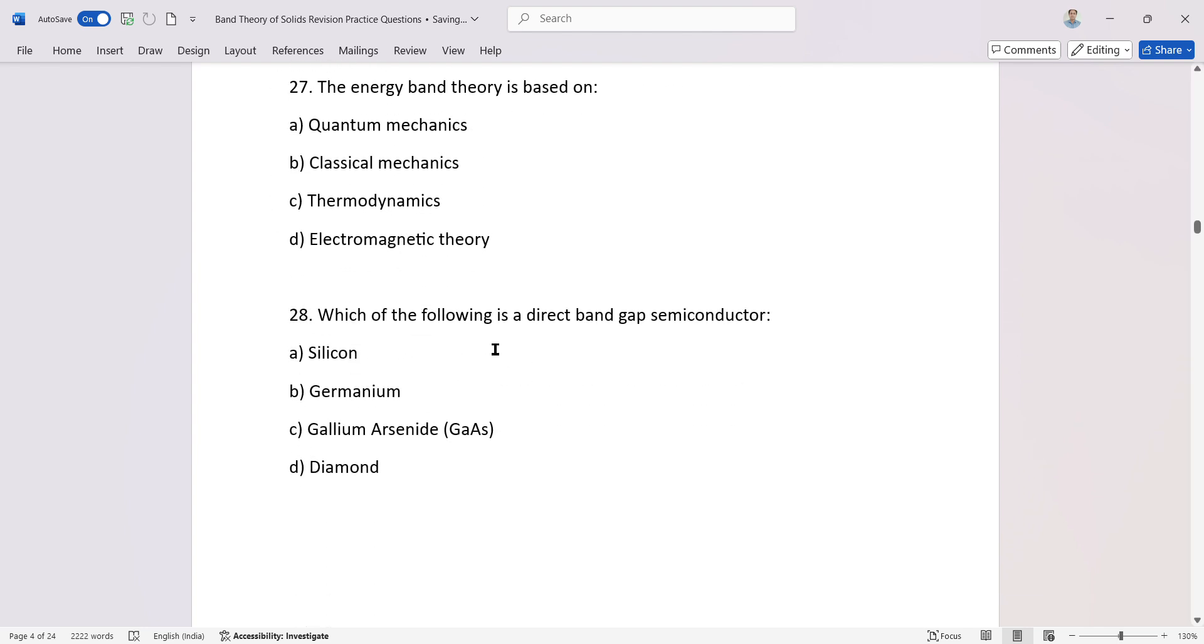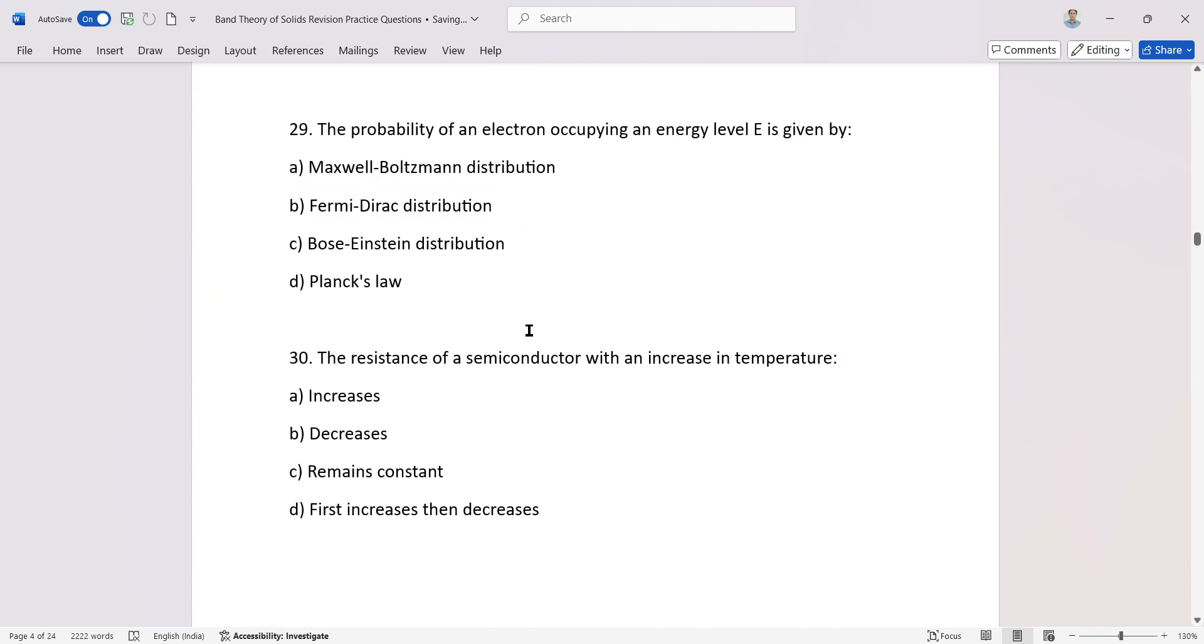The energy band theory is based on quantum mechanics. Which of the following is a direct band gap semiconductor? Gallium arsenide. The probability of an electron occupying an energy level E is given by the Fermi-Dirac distribution. The resistance of a semiconductor with an increase in temperature decreases.